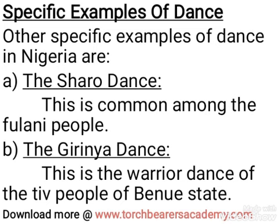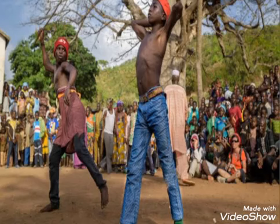Specific examples of dance in Nigeria: number one, the Sharo dance. It is common among the Fulani people. Sharo in Fulani means flogging, and this dance is a festival for the rite of passage from boyhood to manhood. It is a test of strength and endurance for the Fulani boys, and it is usually done during marriage ceremony. The Fulani boy will be flogged to show how strong he is and how he can endure in marriage.